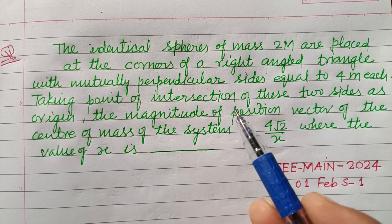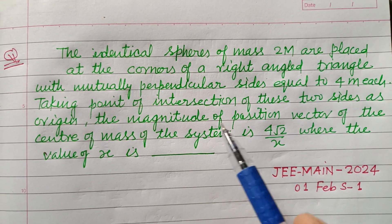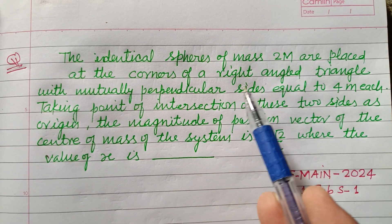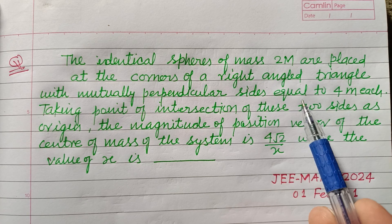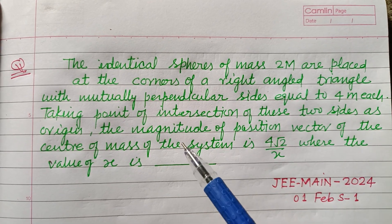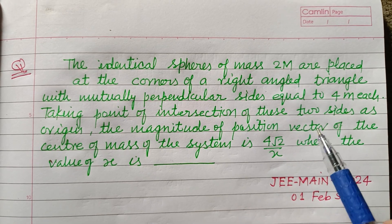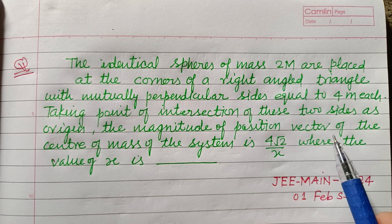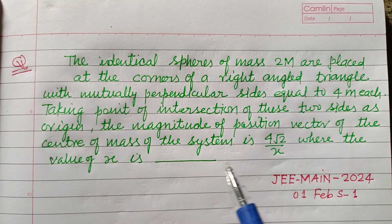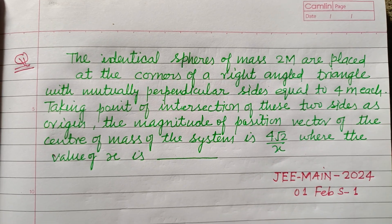The identical spheres of mass 2m are placed at the corners of a right angle triangle with mutually perpendicular sides each equal to 4 meters. Taking point of intersection of these two sides as origin, the magnitude of position vector of the center of mass of the system is 4√2/x, where the value of x is.